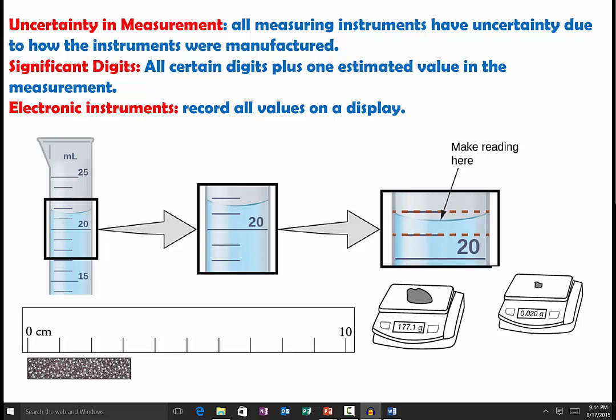For instance, we have a graduate cylinder here, and there are uncertainties because of the way this graduate cylinder is manufactured based on the mark on the graduate cylinder.